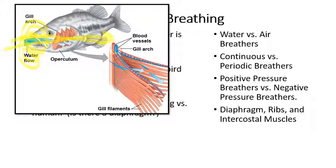Fish are water breathers. They have this very efficient system, and having a continuous-flow breathing system is actually much more efficient than a periodic flow.